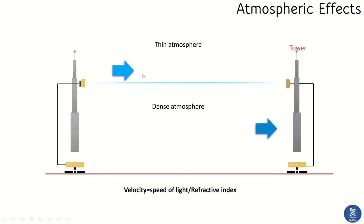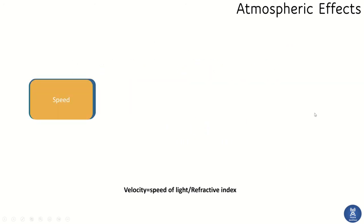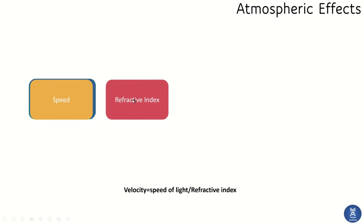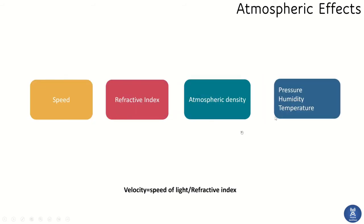In summary, the speed of electromagnetic waves depends upon the refractive index, the refractive index depends upon the atmospheric density, and the atmospheric density depends upon three factors: pressure, humidity, and temperature. The only variable in the velocity formula is the refractive index.